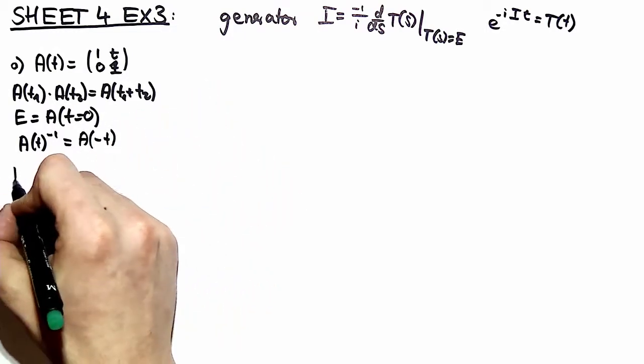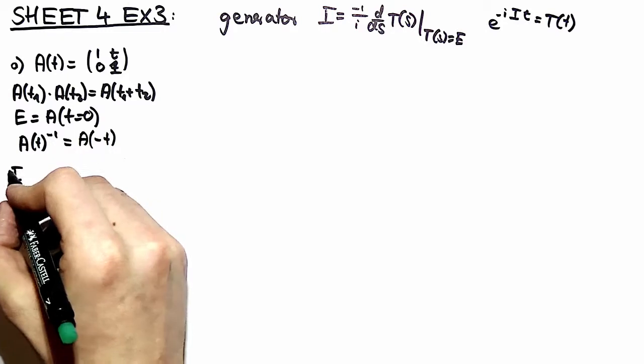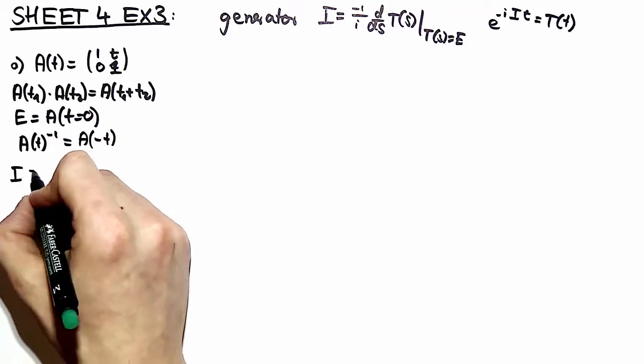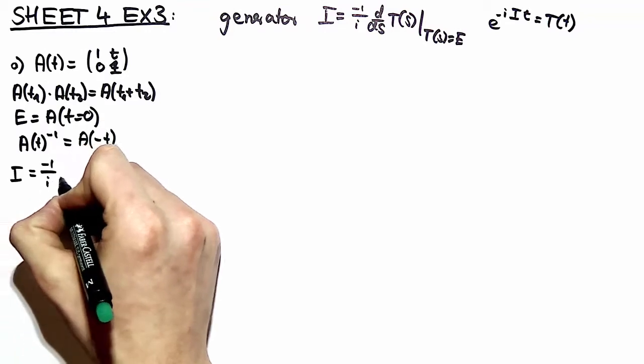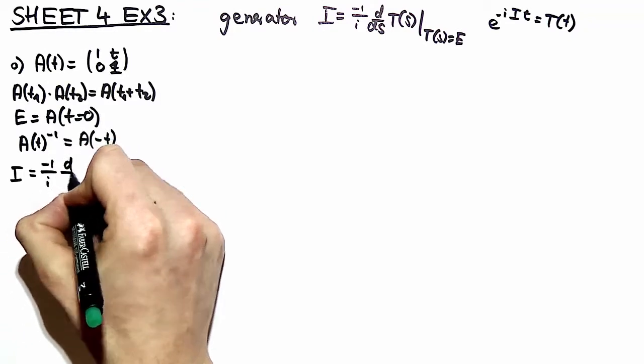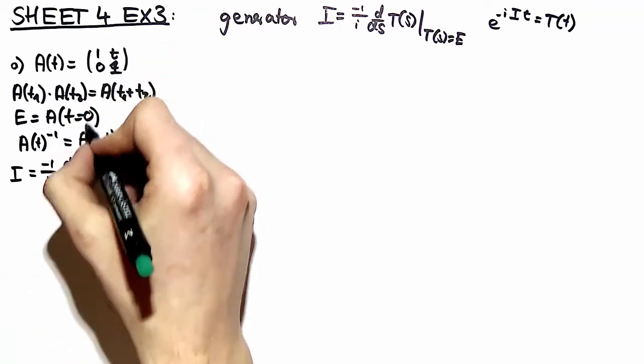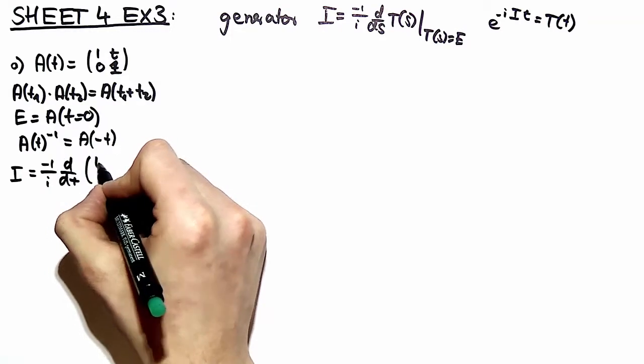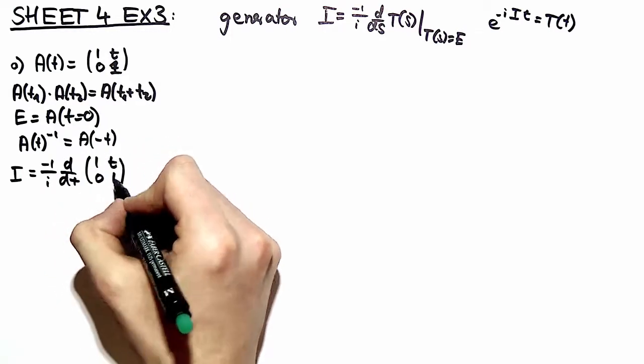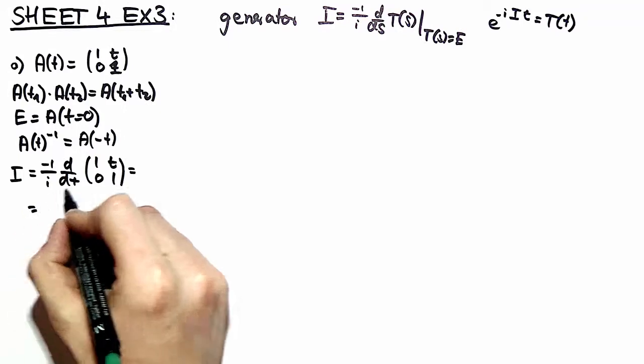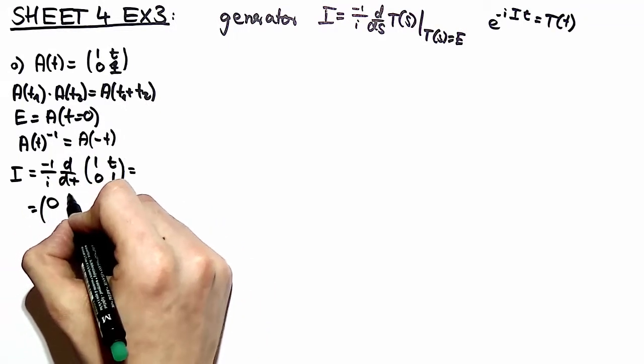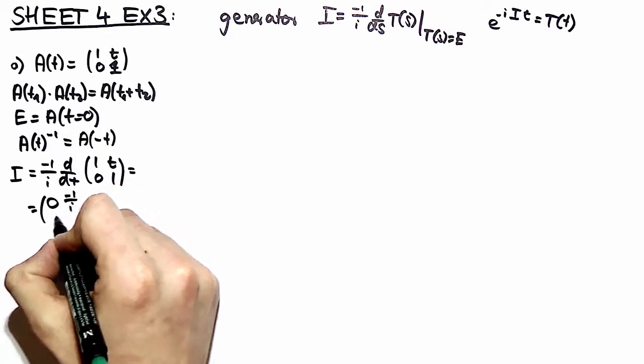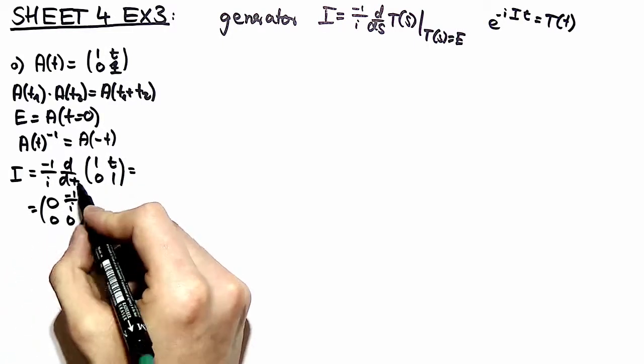Okay now we want to see what is the generator of this group. Well we just copy from over here. Here this is minus 1 over i d by dt of this matrix representation 1 t 0 1. And then you see this is nothing else than a matrix with minus 1 over i in the upper right corner.